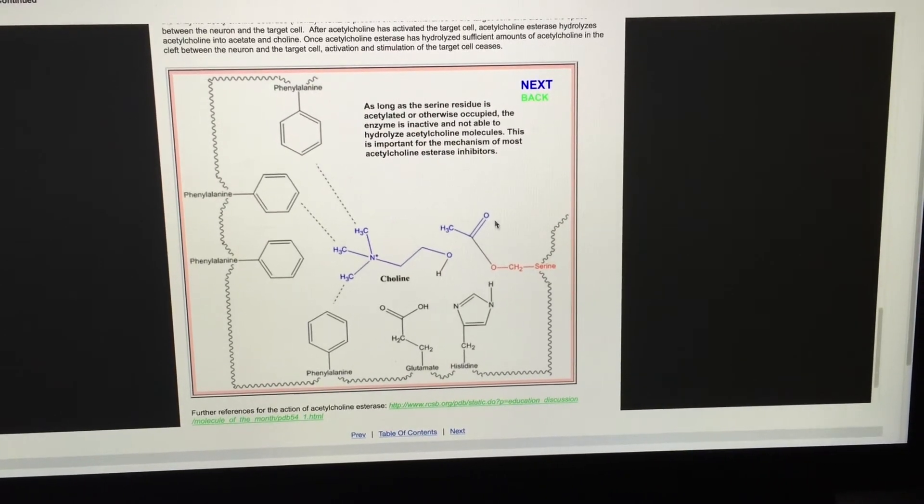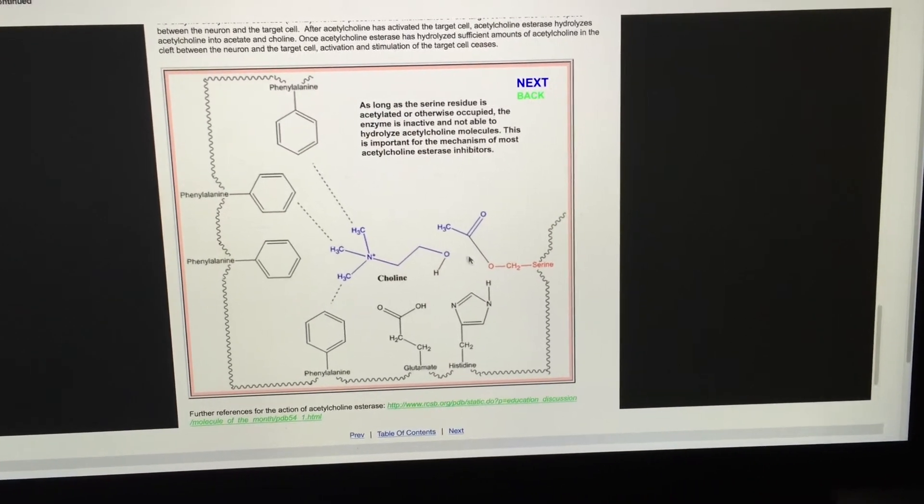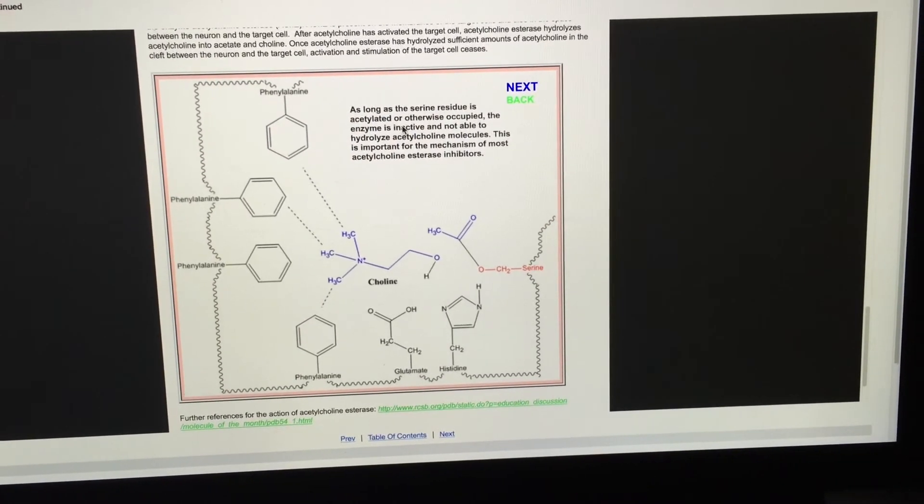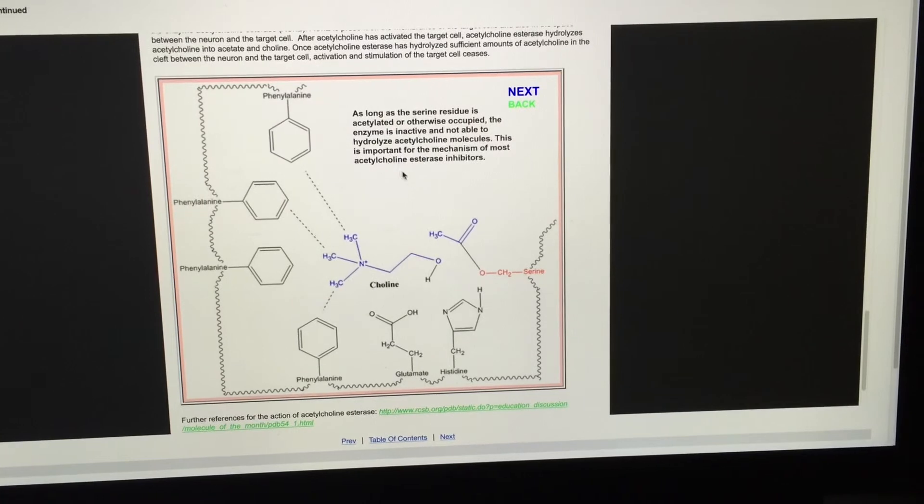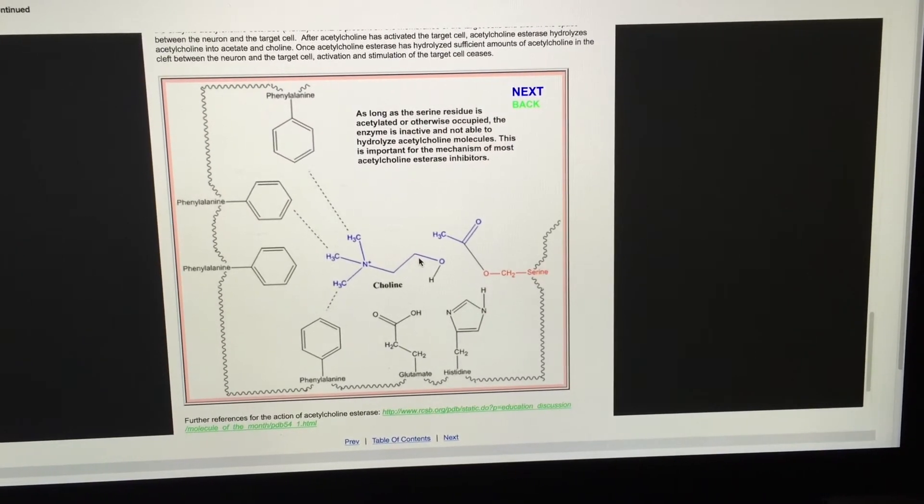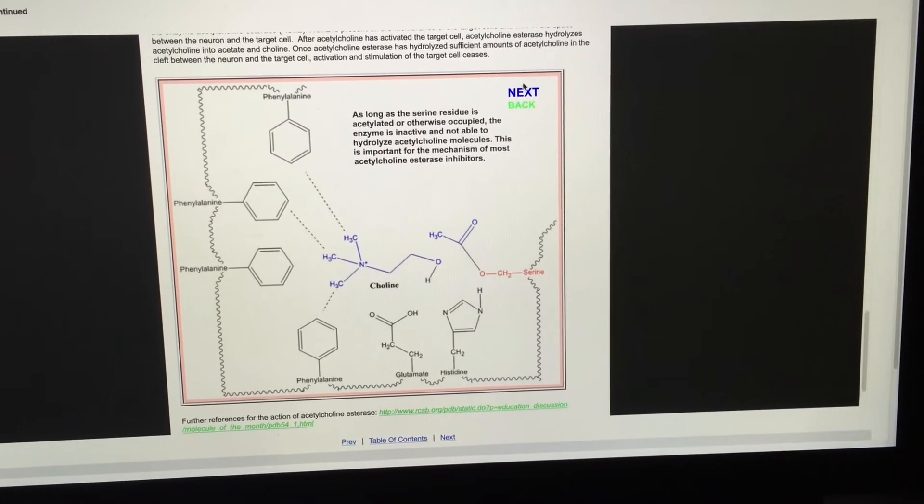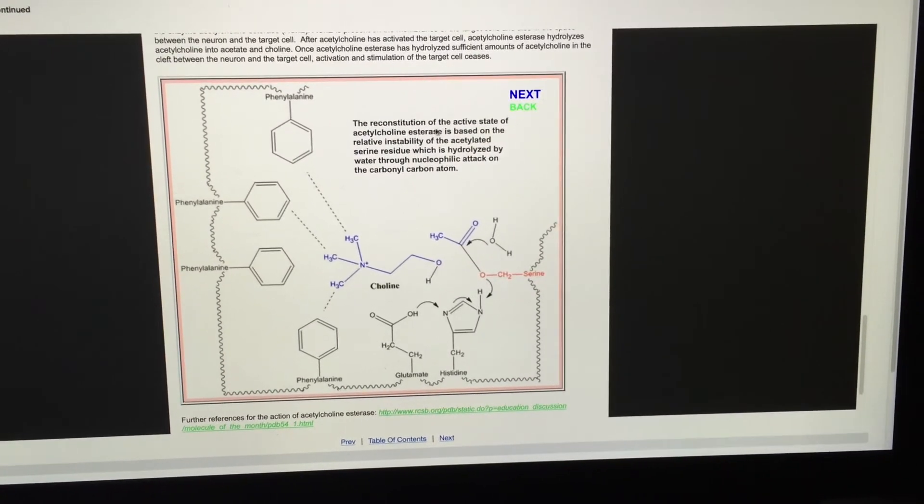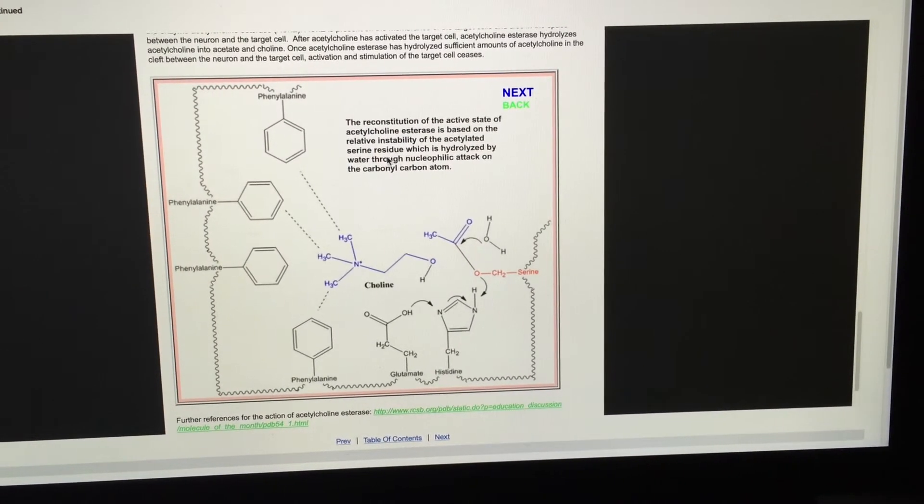Of particular importance is the fact that the serine group is currently acetylated. If the serine group is acetylated by substances like nerve agents, that will effectively render the cholinesterase enzyme inactive. In the case of acetylcholine, however...